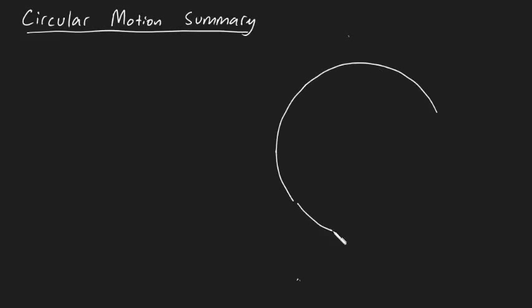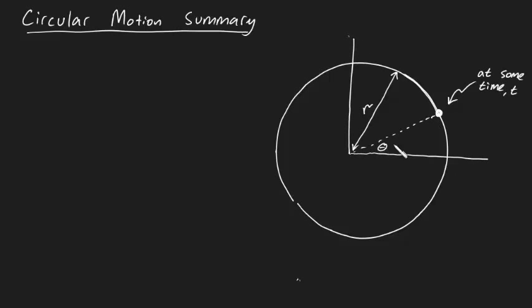Imagine a particle traveling in a circular path of radius r. At some time t, the particle will be displaced at angle theta from the horizontal.